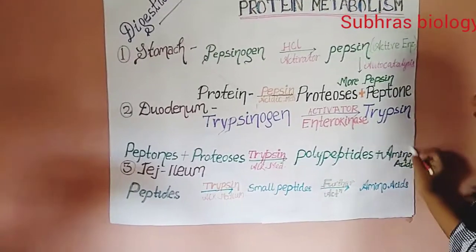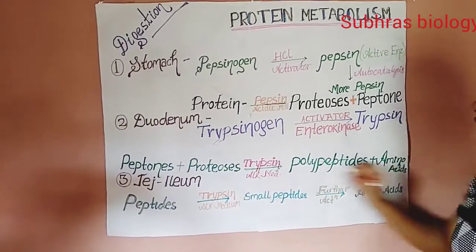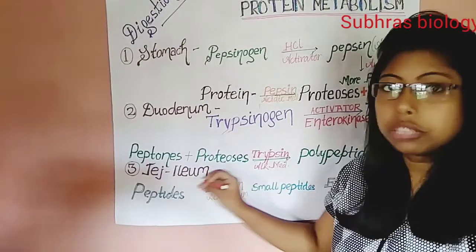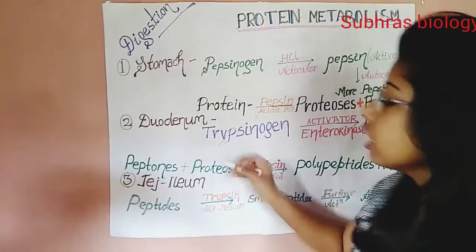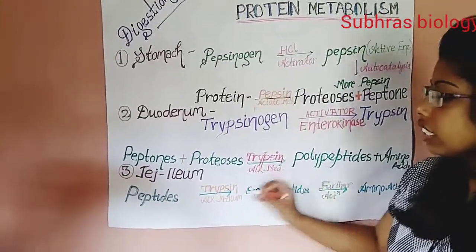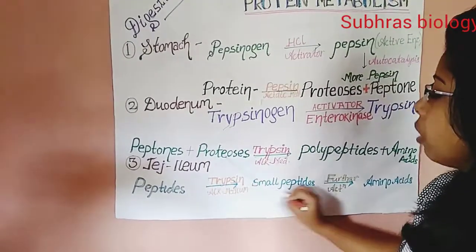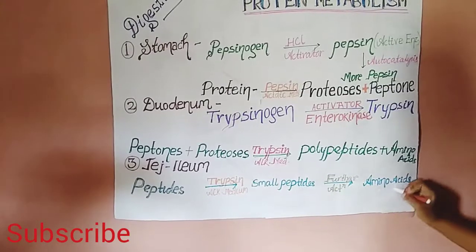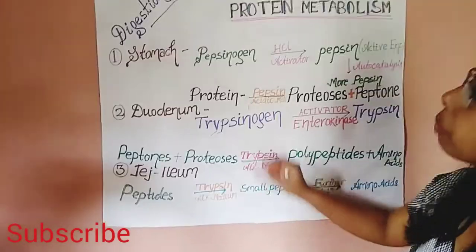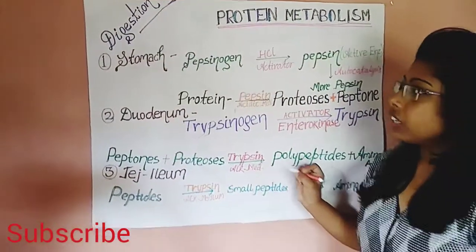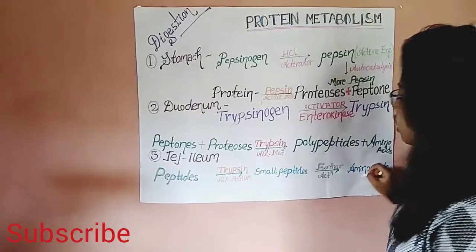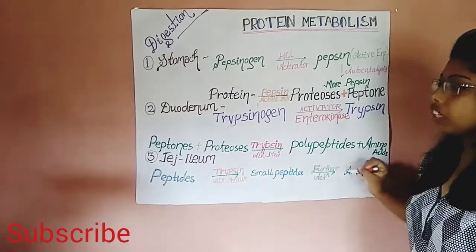Amino acids are the final product of protein digestion. The polypeptides and amino acids then move to the secondary part of the small intestine — the jejunum and ileum. Here, peptides formed after the action of chymotrypsinogen and pro-carboxypeptidase are further broken down in an alkaline medium to form small peptides and ultimately amino acids. This is the final degrading step of protein metabolism, completed in the small intestine.